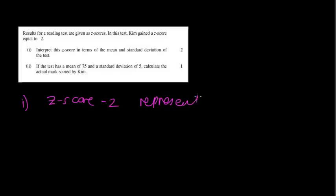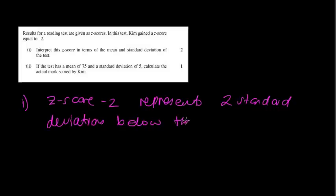Two more questions to go. Results for reading tests are given as Z scores. In this test, Kim gained a Z score equal to negative 2. Interpret the Z score in terms of the mean and the standard deviation of the test. Well, a Z score of negative 2 represents two standard deviations below the mean.